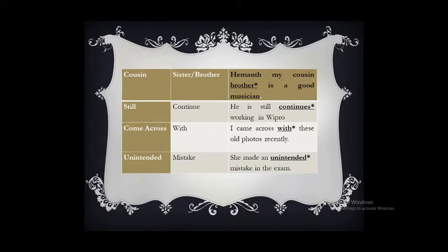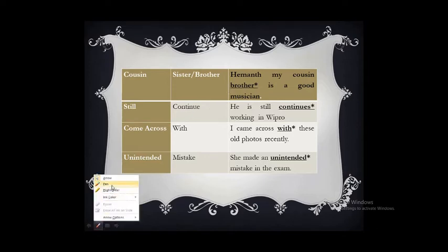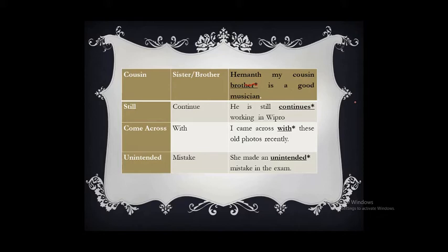'Cousin sister or brother' — cousin already means sister or brother, so we should use either 'he is my cousin' or 'he is my brother.' The correct sentence is: 'Hemant, my cousin, is a good musician.' We should not use 'brother' additionally here. 'Still continue' — still itself means something is ongoing, so we should not use 'continue' with it.